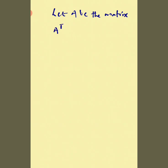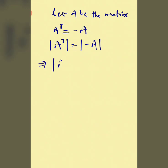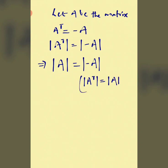Now observe the matrix. It is a skew-symmetric matrix, which means A transpose equals minus A. Now we take the determinant of both sides of this equation. We use the property that the determinant of A transpose equals the determinant of A. This is the key property we apply here.